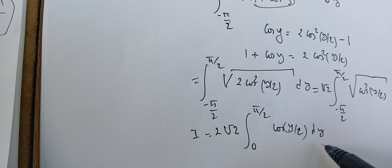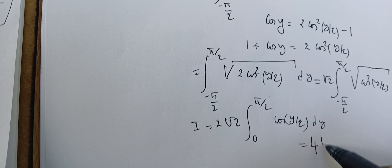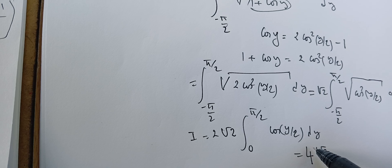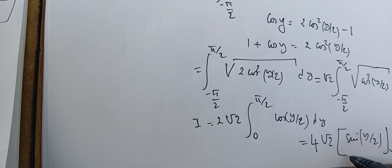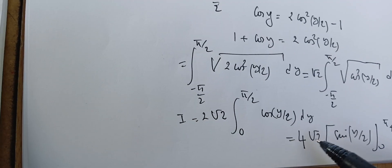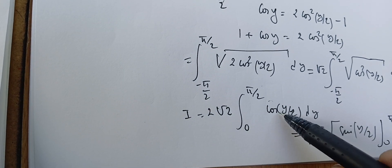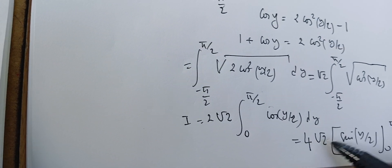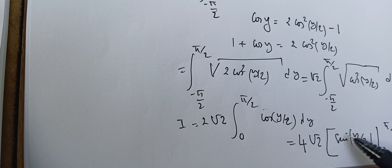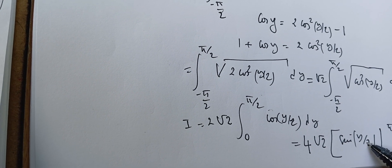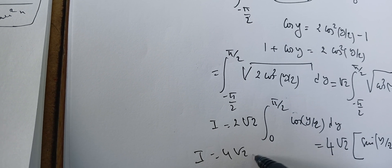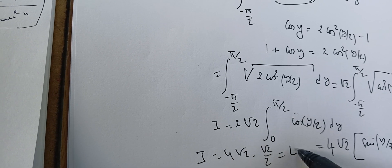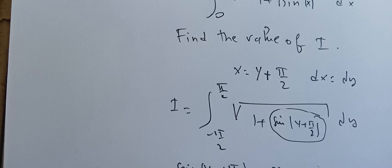So I have 2 times square root of 2 times the integral from 0 to pi over 2 of cosine of y over 2 dy, which evaluates to 4 square root of 2 times sine of y over 2, evaluated from 0 to pi over 2. The factor of 2 comes from integrating with the substitution. Evaluating gives sine of pi over 4, which is square root of 2 over 2, so I equals 4 times square root of 2 times square root of 2 over 2.